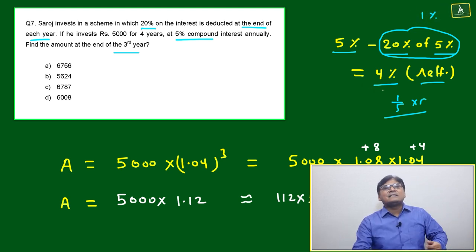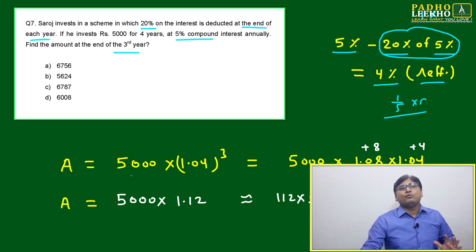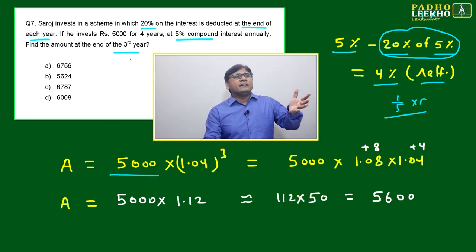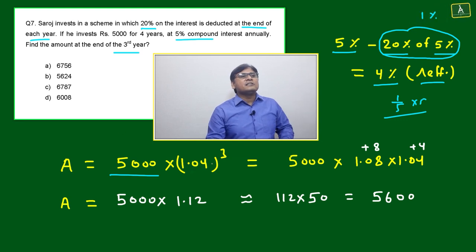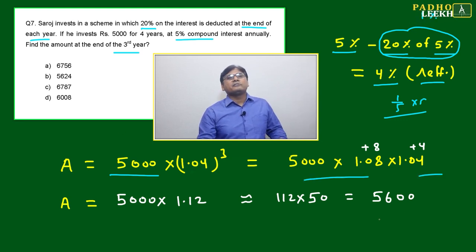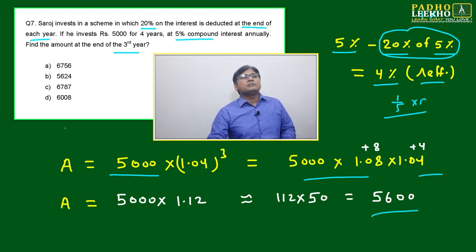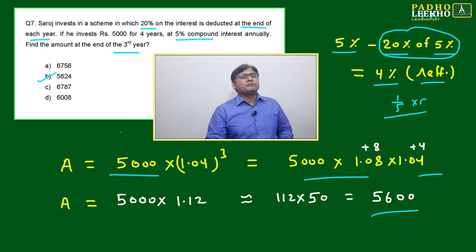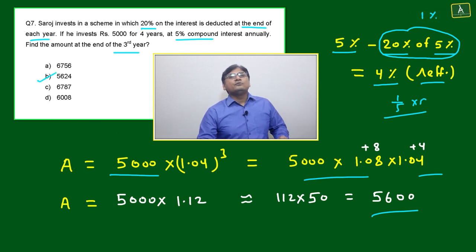Now afterwards, if we want to calculate after three years, then 5000 × (1.04)³. Just calculate, it will be 5600. Then how much we have to mark the answer? 5624.